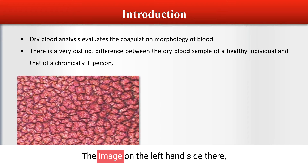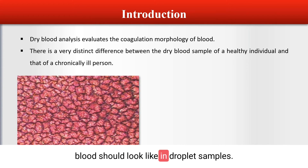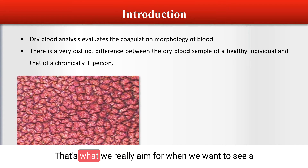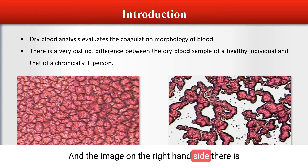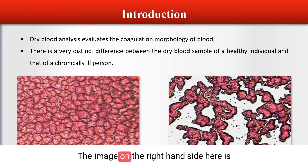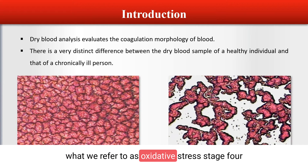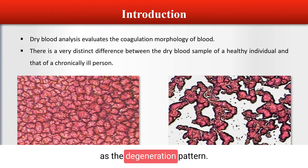The image on the left hand side is a very good example of what normal blood should look like in dry blood samples — that's what we really aim for when we want to see a healthy dry blood image. The image on the right hand side is at the other end of the spectrum, referred to as oxidative stress stage 4, or the degeneration pattern.